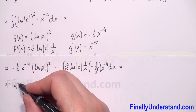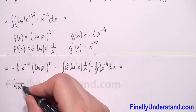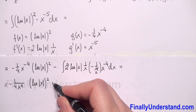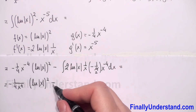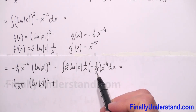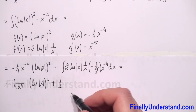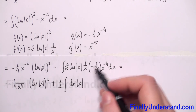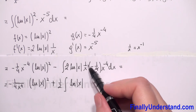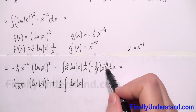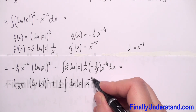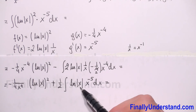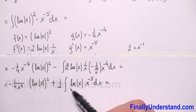So this equals — we can reduce 4 with 2 — and we have negative 1 over 4, x to the negative 4 can be put in the numerator, times the square of the natural logarithm of |x|, minus — negative times negative gives us positive — and we have the constant 1 over 2 times the integral of ln|x|. And 1/x times x to the negative 4 gives x to the negative 5, dx.